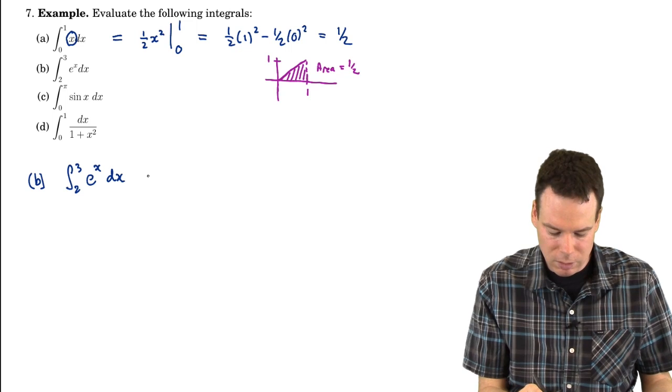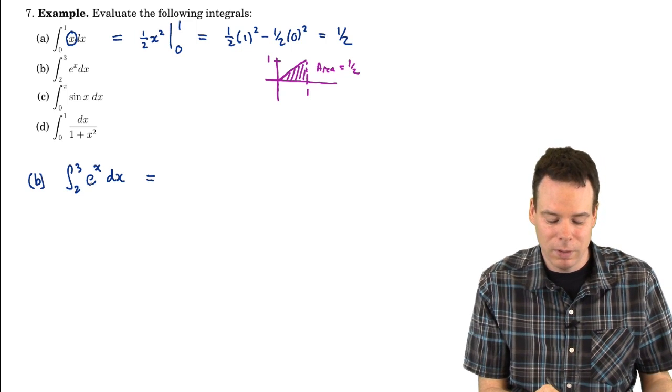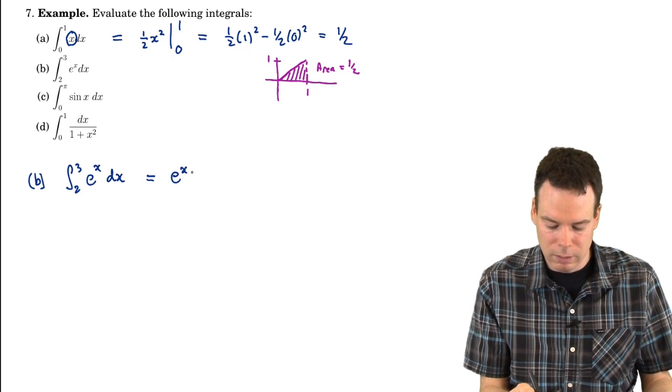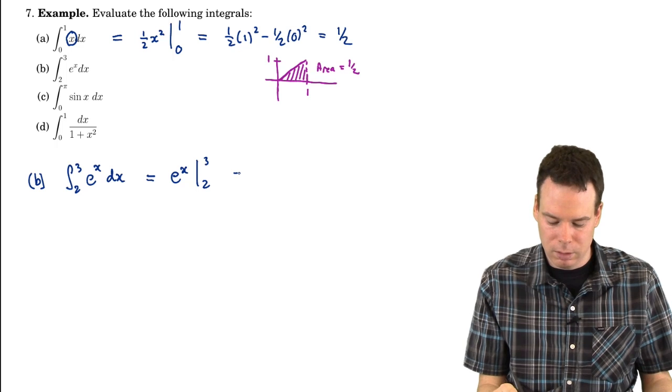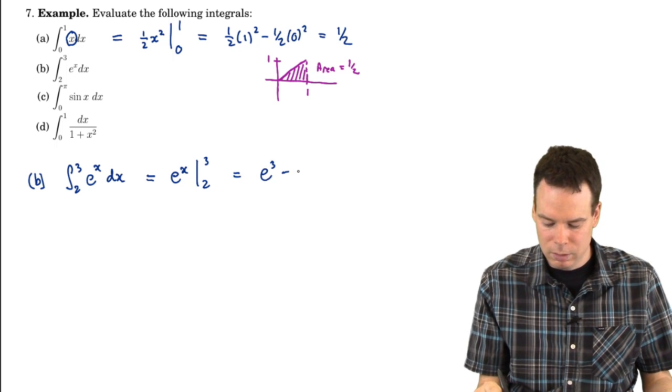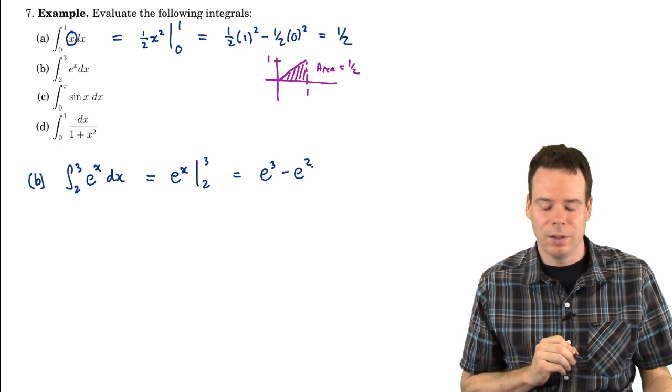We just need to know an antiderivative of the integrand. What function has a derivative of e to the x? Well that's just e to the x. So we evaluate it at 3 and subtract its value at 2 and there's the value of the integral.